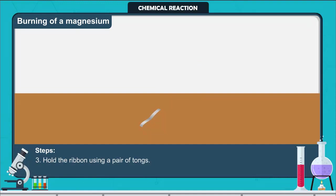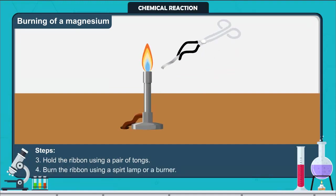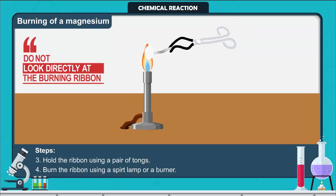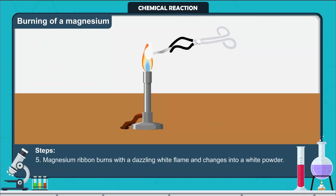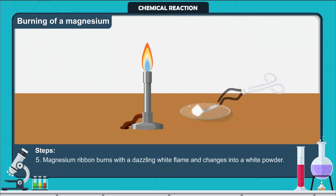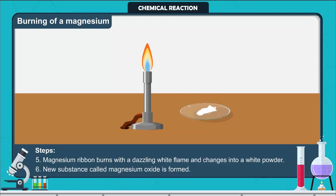Hold the ribbon using a pair of tongs. Burn the ribbon using a spirit lamp or a burner. The burning ribbon should be held at arm's length. Do not look directly at the burning ribbon. You must have observed that the magnesium ribbon burns with a dazzling white flame and changes into a white powder, which is collected in a watch glass. Due to the reaction between magnesium and oxygen present in the air, a new substance called magnesium oxide is formed.